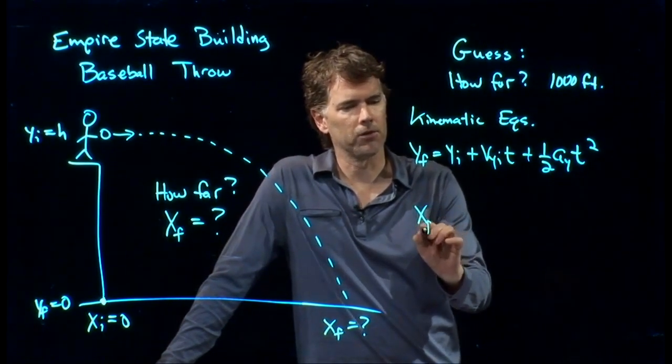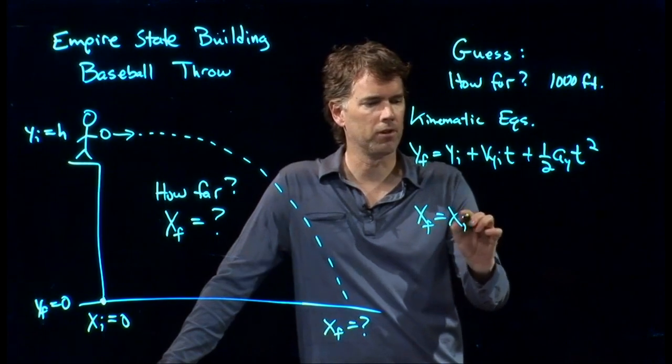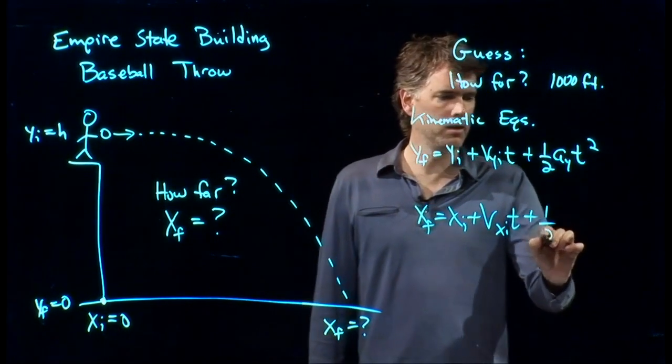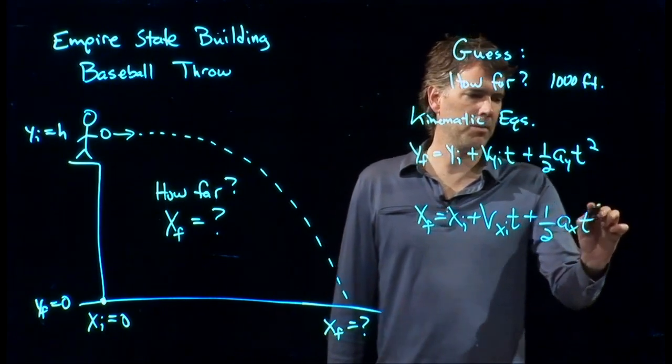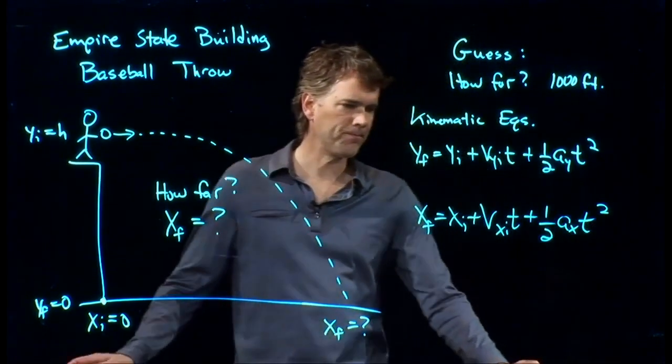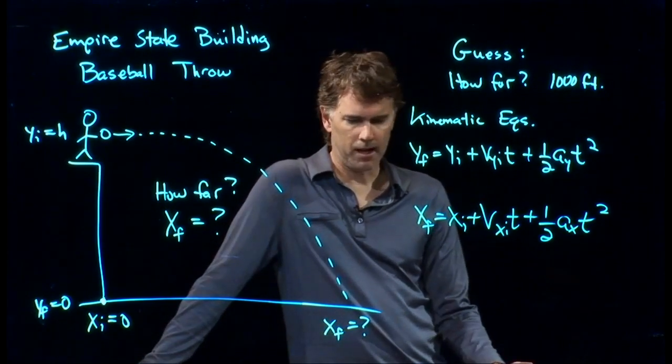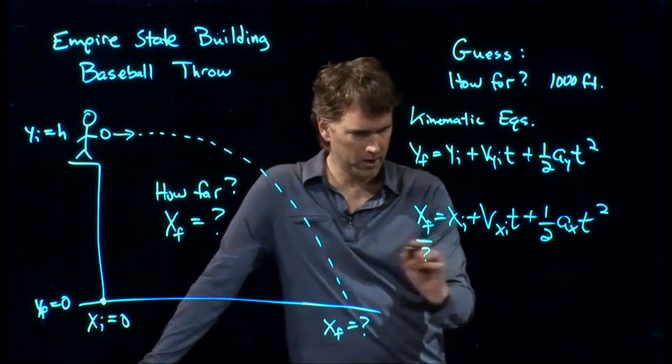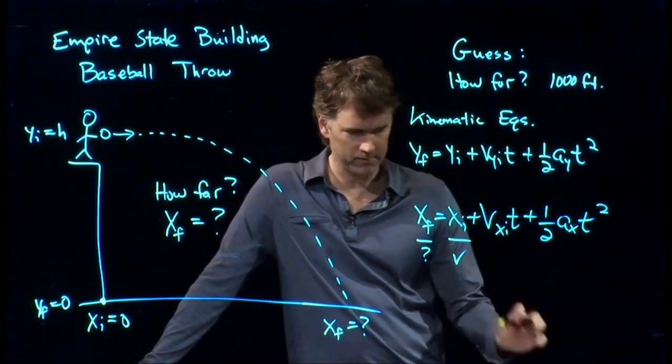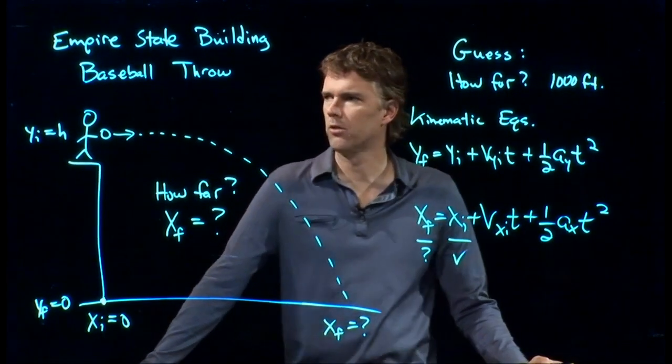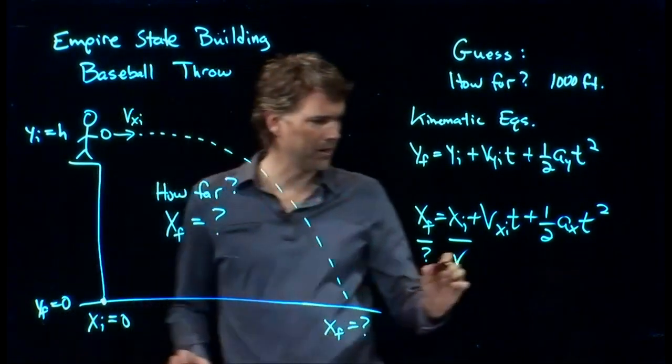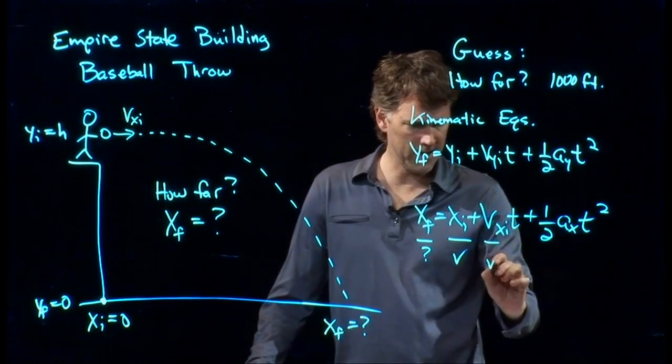Now, let's go to the X equation. X final equals X initial plus V X initial times T plus one-half A sub X T squared. That, of course, has X final in it. And that's what we're looking for. That's good. X initial, we know. We started at zero. V X initial, we would have to give you that. So we're going to say that we do know V X initial.